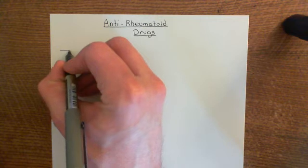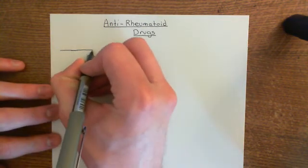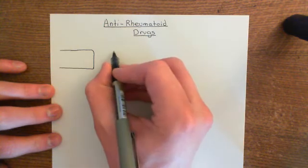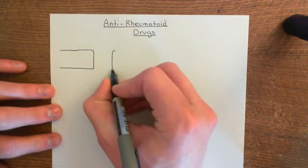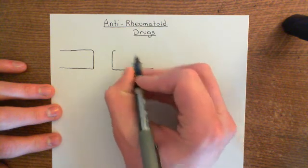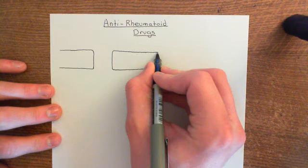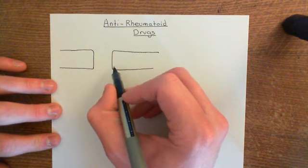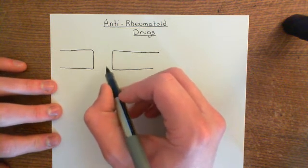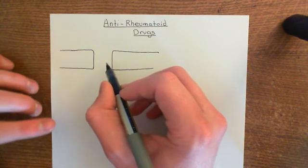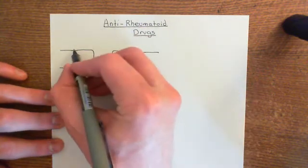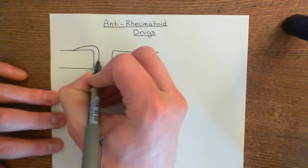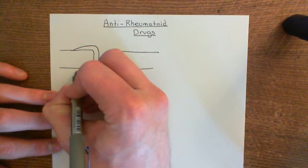A synovial joint is fundamentally a place where two bones come together. Synovial joints are very movable joints in general, so the two bones can move relative to one another. Because the bones are going to be moving over one another, there is a risk of a lot of friction. The terminal ends of the bones are covered by a layer of cartilage, which is mainly hyaline cartilage.